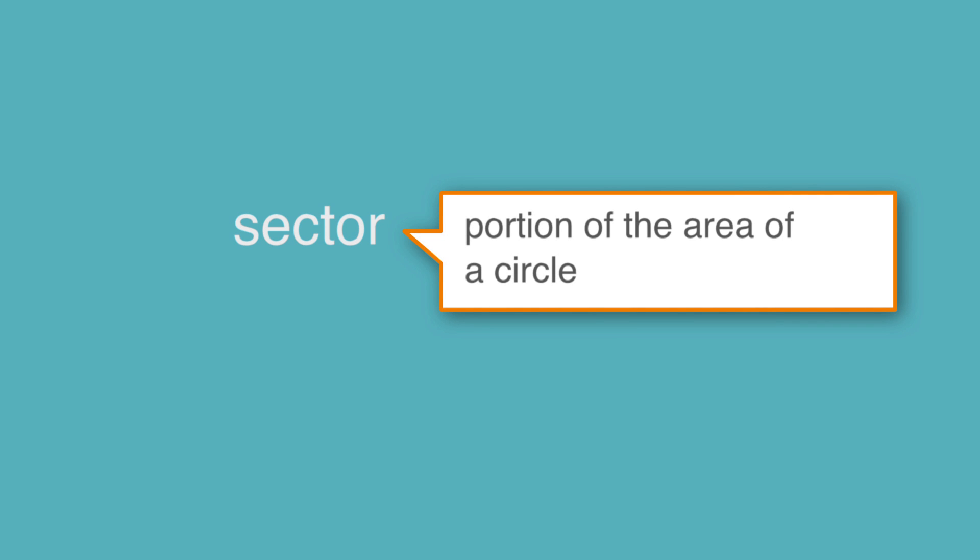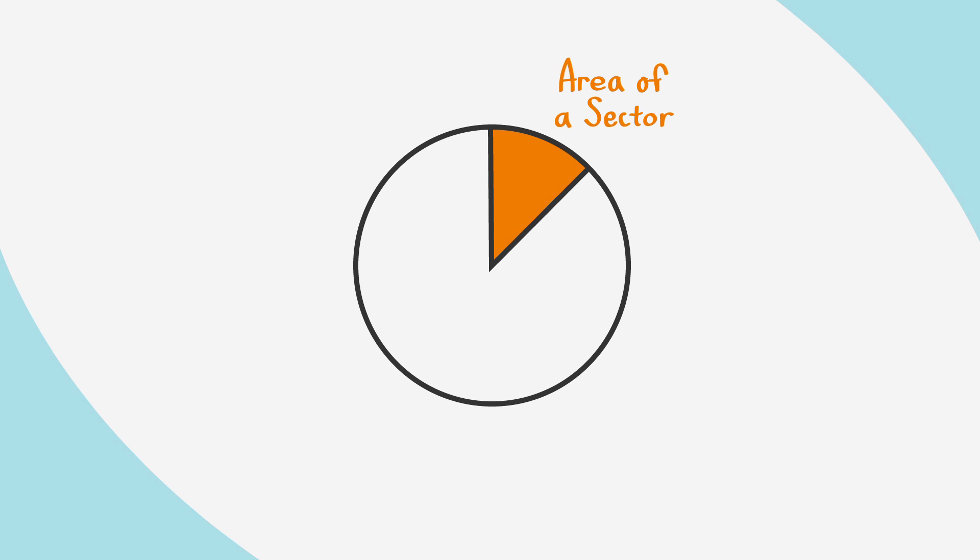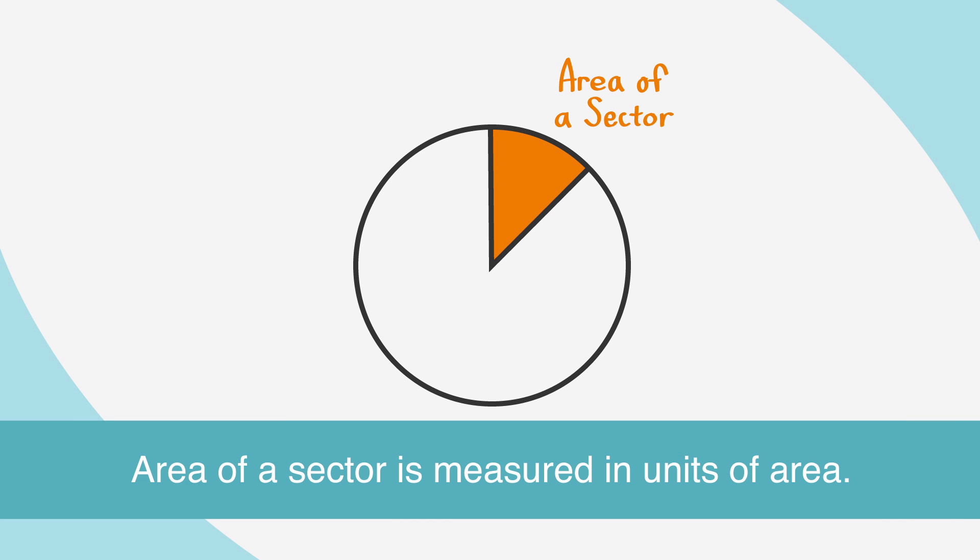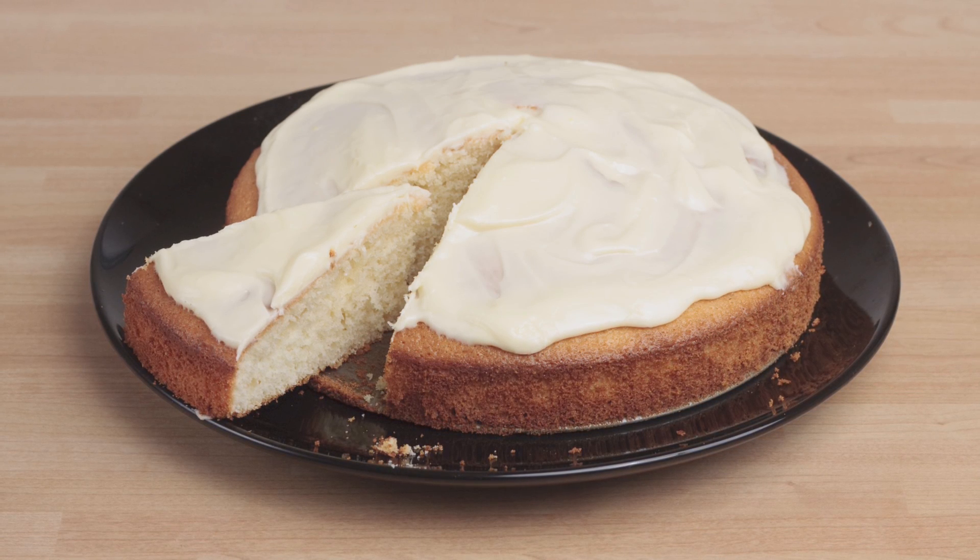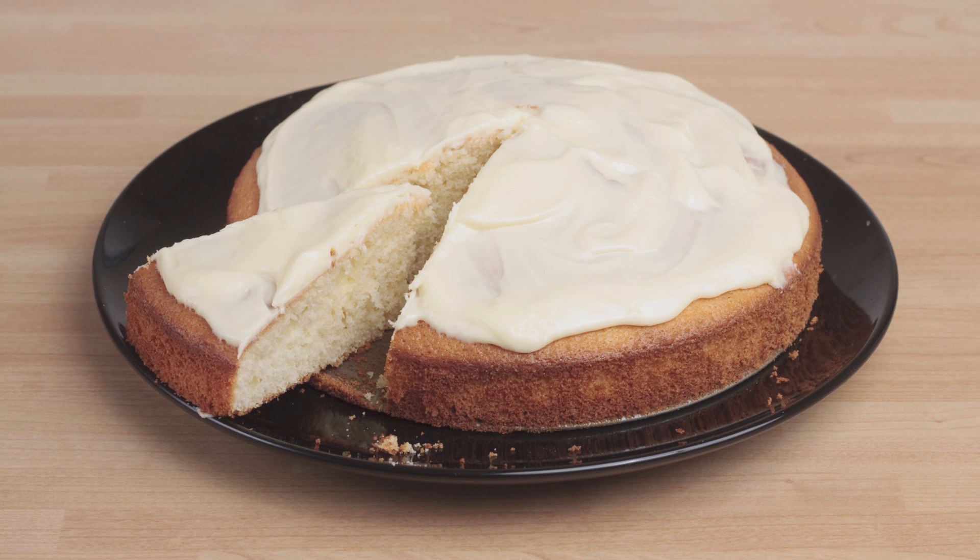A sector is a portion of the area of a circle. So the area of a sector is the area of a portion of that circle. It's measured in units of area, such as square centimeters, square inches, or square feet. If you love dessert like I do, you may prefer to think of the area of a sector as the size of a cake slice.